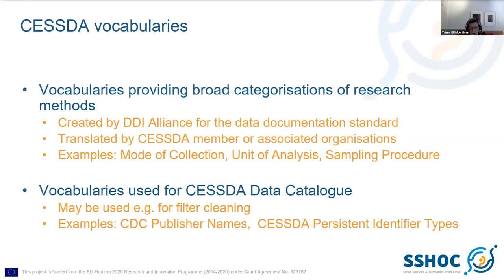What they did was standardize all organization names in English and attach each to an endpoint, cleaning the publisher filter that way. For persistent identifiers, SESTA decided there are four different types of persistent identifiers it would like organizations to use. This CV is mainly to tell people that when they enter metadata and give the type of PID used, they provide it in a consistent manner.